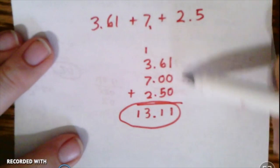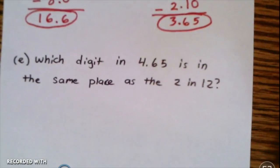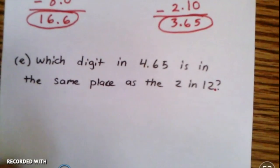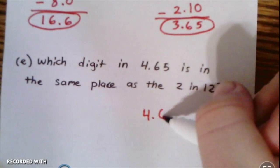Which digit in 4.65 is in the same place as the 2 in 12? Well, the best way to figure this out is to do exactly what I just did, which is to pin a decimal at the end of the whole number and then line them up.